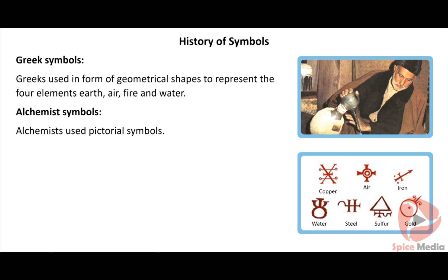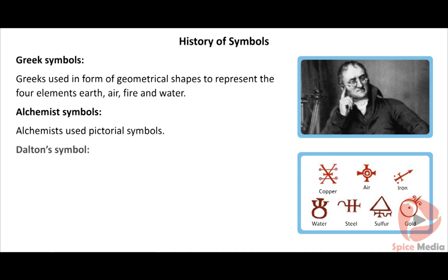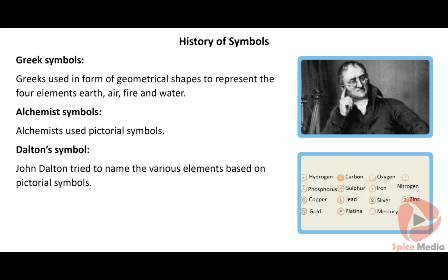Dalton's symbol: In 1808, John Dalton, English scientist, tried to name the various elements based on these pictorial symbols. The uses of these symbols are difficult to draw and inconvenient to use. Hence, Dalton's symbols are not used. It is only of historical importance.